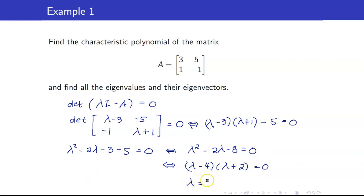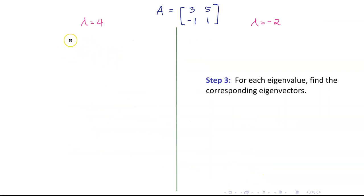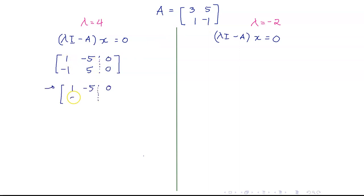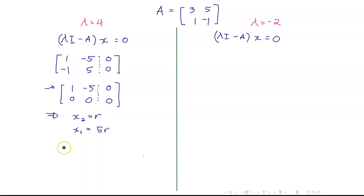So our eigenvalues are lambda equals 4 or lambda equals negative 2. For lambda equals 4, the matrix lambda I minus A becomes [1, negative 5; negative 1, 5]. The second row is a scalar multiple of the first row, so we get that x2 is a free variable and x1 equals 5x2 equals 5r. Therefore, the eigenvectors for lambda equals 4 are of the form [5r, r] where r is any non-zero real number.